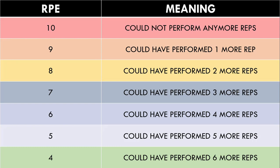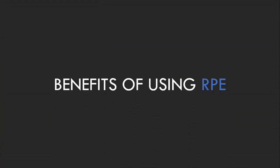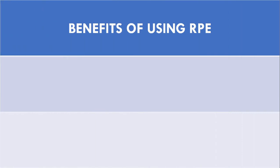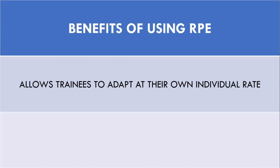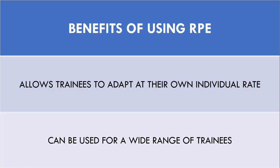Now that we understand what RPE is, we will discuss what benefits RPE has over traditional programming prescriptions. RPE is a way to auto-regulate training based on how the trainee is adapting. Prescribing concrete sets, reps, and loads assumes that we can predict exactly how the trainee will respond to the training, which is almost impossible since individuals can have very different responses. This could potentially limit progress, as they may be able to adapt at a faster rate than what the program suggests. RPE can also be used to program for trainees of different levels of advancement. Since the RPE system is based on individual feedback, it can cater for a wide range of people, rather than trying to assume the rate of progression for an advanced or intermediate trainee.